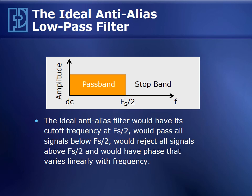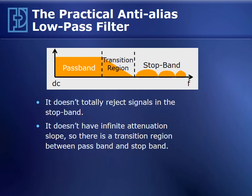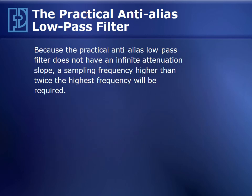In addition, the ideal filter would have phase that varies linearly with frequency. However, such a filter is not realizable. To implement a realizable filter, we have to have a transition region with a finite attenuation slope from pass band to stop band. The pass band may have some attenuation near the cutoff frequency, and the stop band has a finite amount of attenuation. To deal with a practical anti-aliasing filter without infinite attenuation slope, a sampling frequency higher than twice the highest frequency of interest will be necessary.